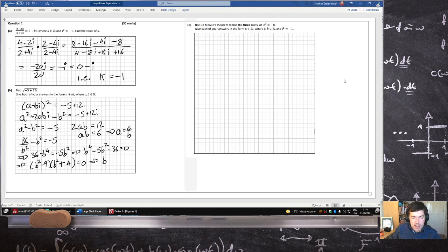So if b squared is 9, that means b is plus or minus 3, which would mean then that a is 6 over b, so it would be 6 over plus or minus 3, so it would be plus or minus 2. In other words, 2 plus 3i, or minus 2 minus 3i are the two answers here.